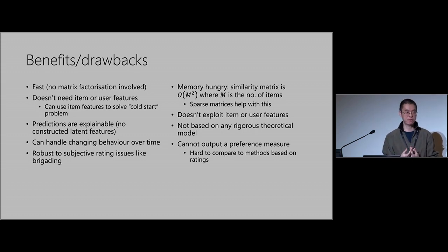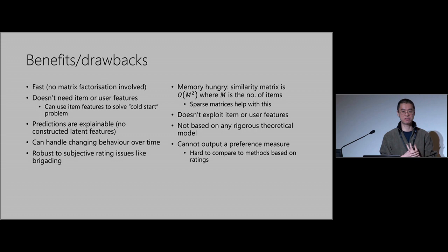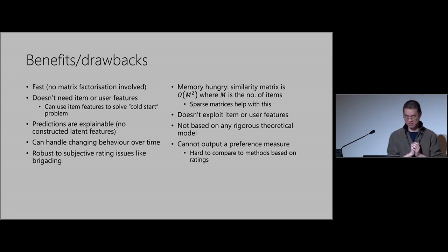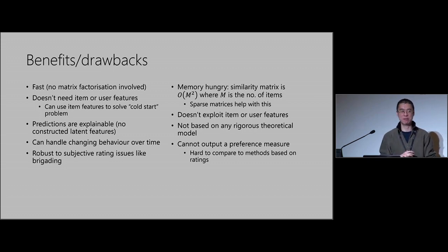Because it doesn't use ratings, it's robust to subjective issues like brigading — where something goes viral on Reddit and you get hordes of people coming in to downvote it. Less controversially, consider how many people actually rate things from Uber or Deliveroo — you might have a dataset with 10,000 items and a million users, but only 1,000 people who regularly rate. So what looks like a big dataset may not actually be that big.